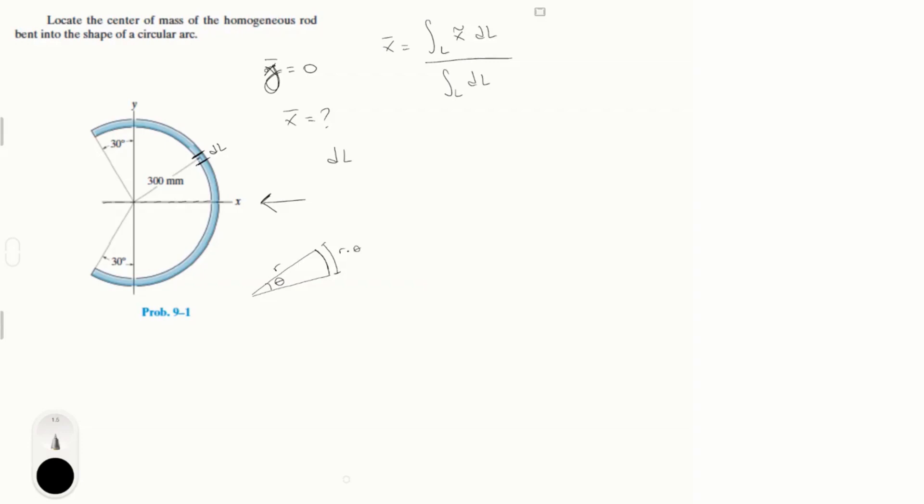So if you wanted to find the length of dl and you know that the radius right here is 300 millimeters or 0.3 meters, let's put it right here, 300 millimeters is equal to 0.3 meters. You know that dl is equal to r which is 0.3 times the theta, theta being this angle right here, the change in the angle about the x-axis.